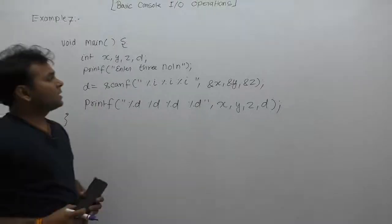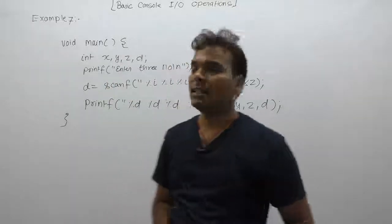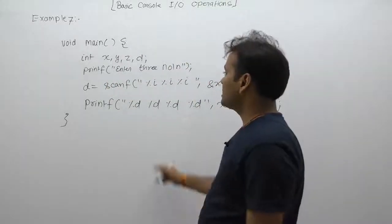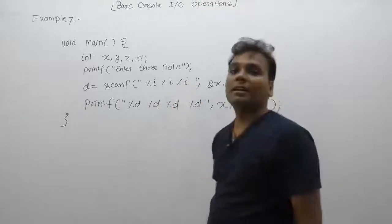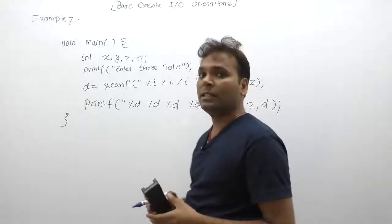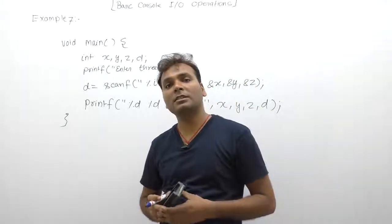Next example with respect to the format specifier percent i. As we discussed in previous videos, percent i's case my runtime decimal number, CV number, sorry decimal integer. CV number system may be decimal number system, may be octal, may be hexadecimal like that.